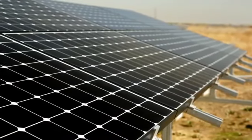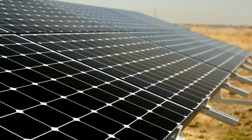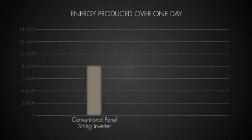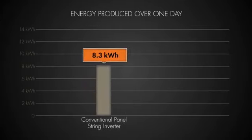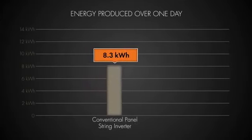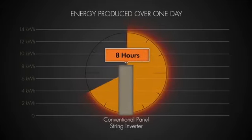Even with no shading present, the four systems tested showed wide variation in the amount of energy generated. The conventional 14.5% panels produced 8.3 kilowatt-hours, enough energy to power the average household for about eight hours.